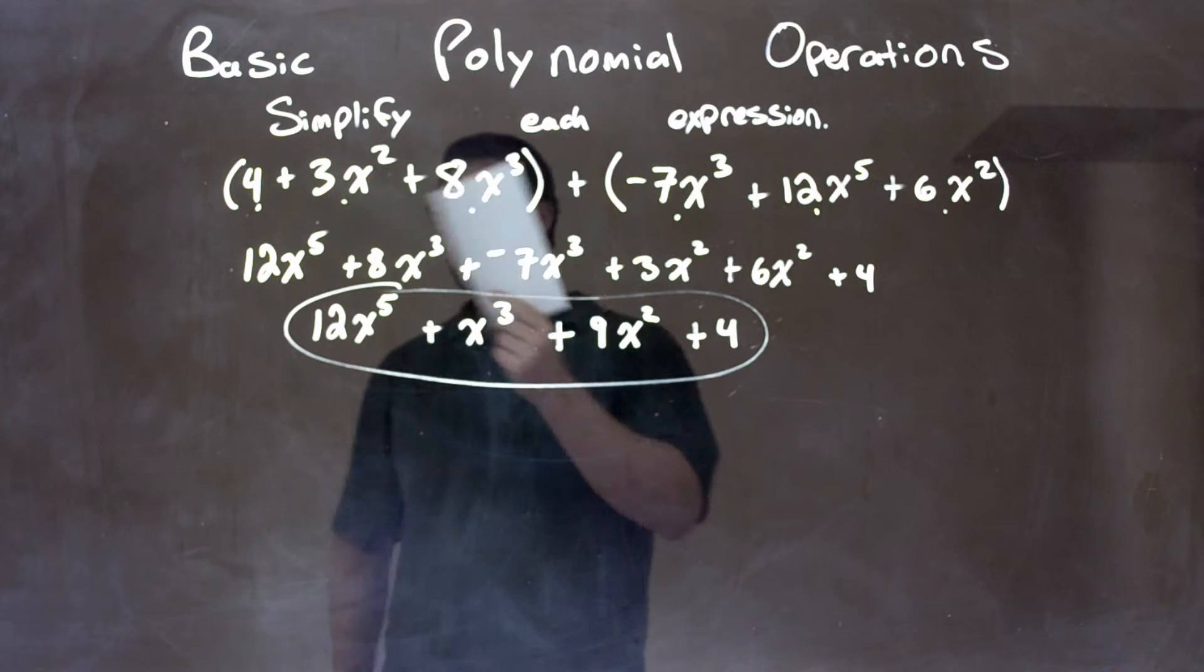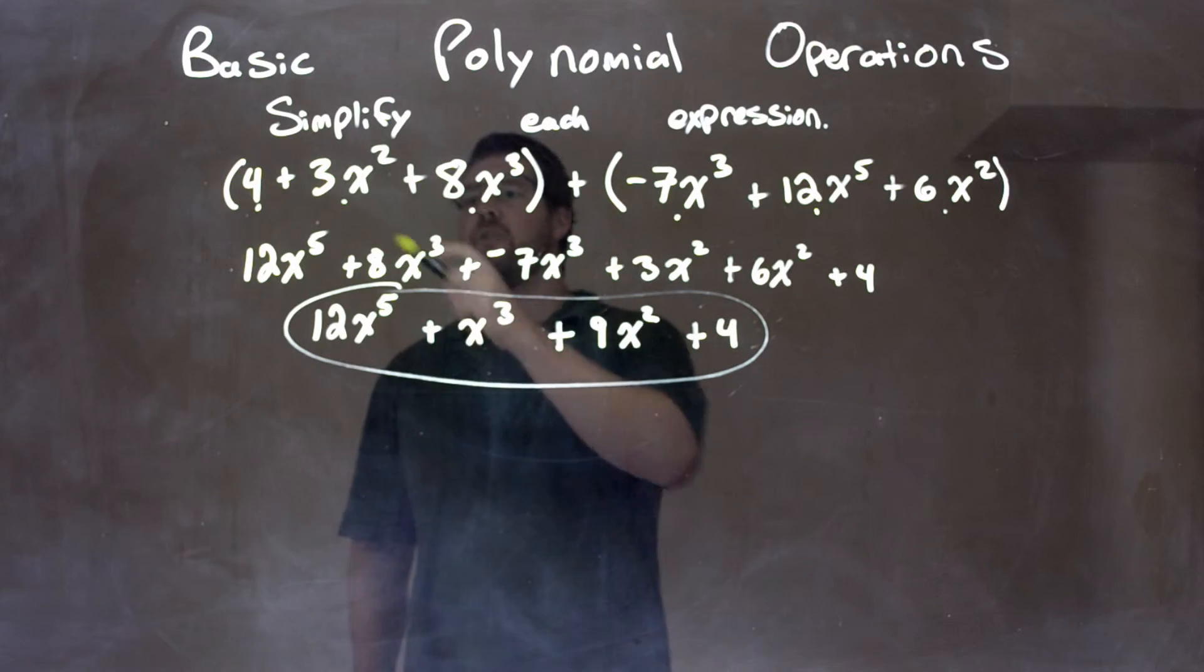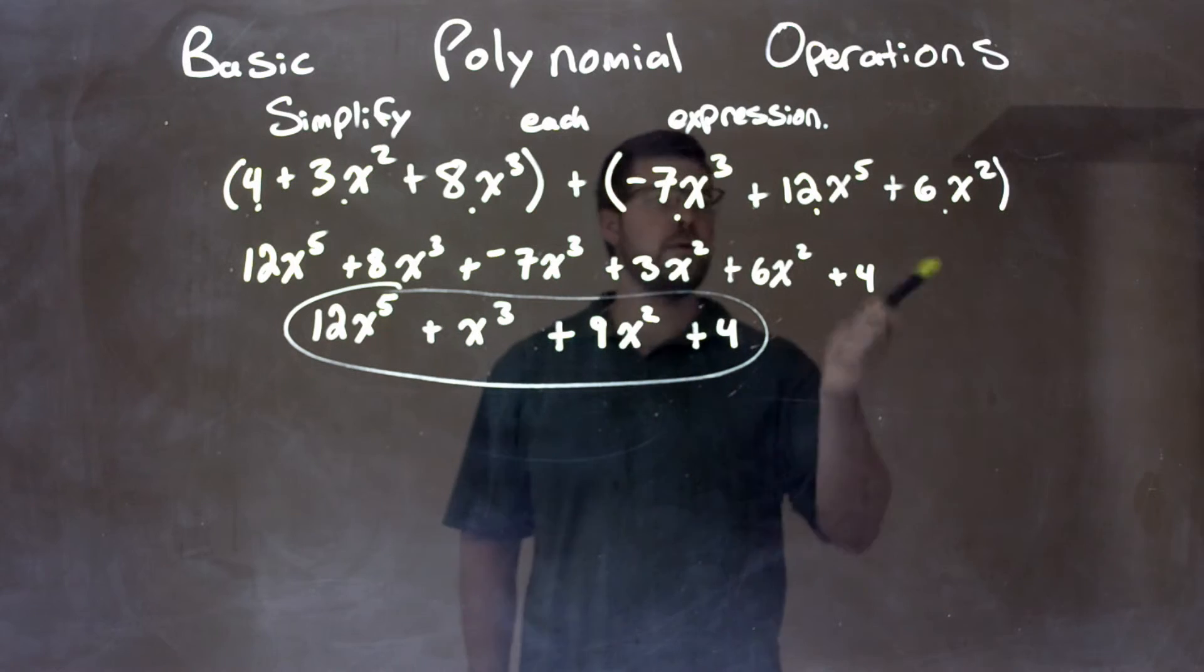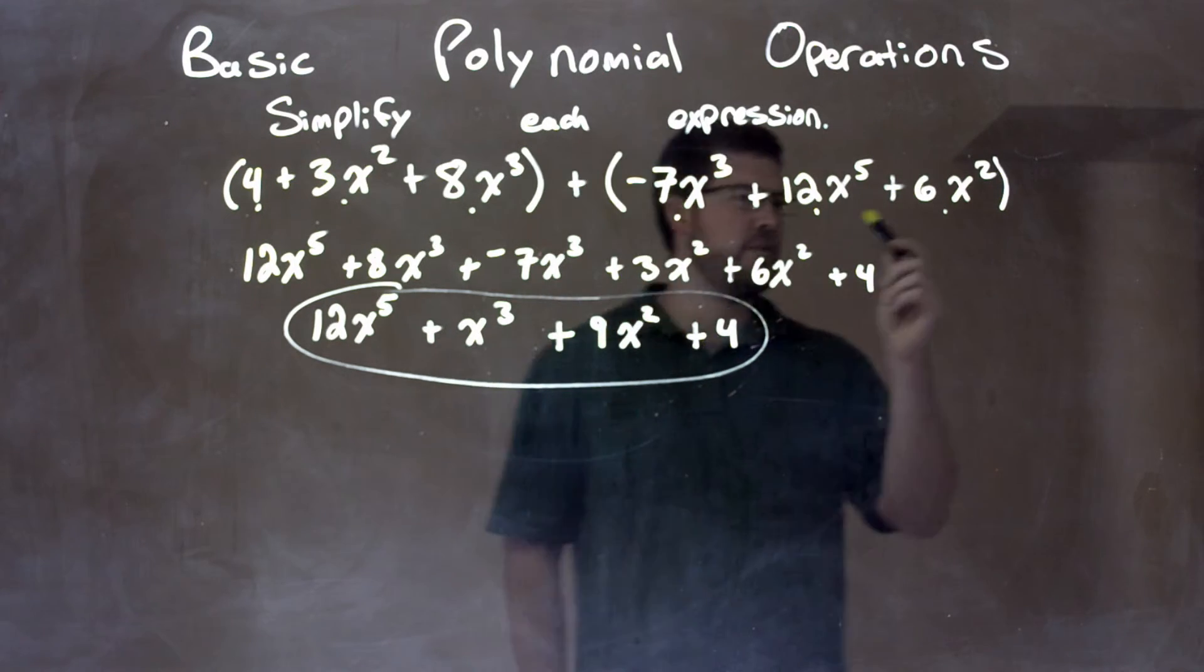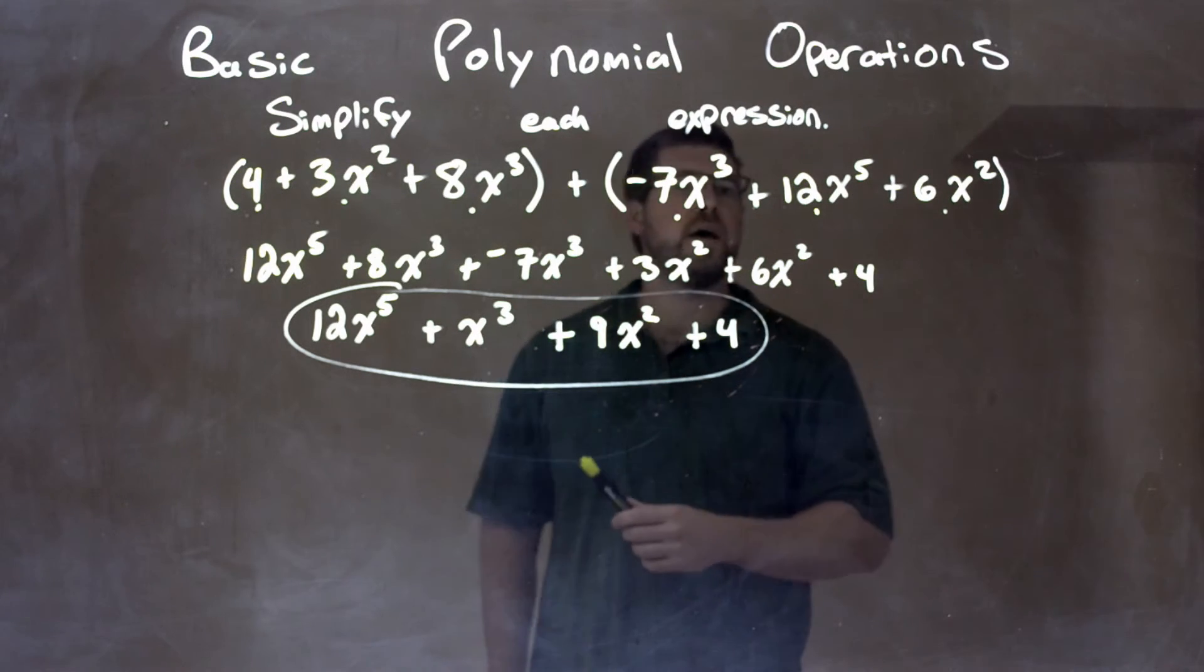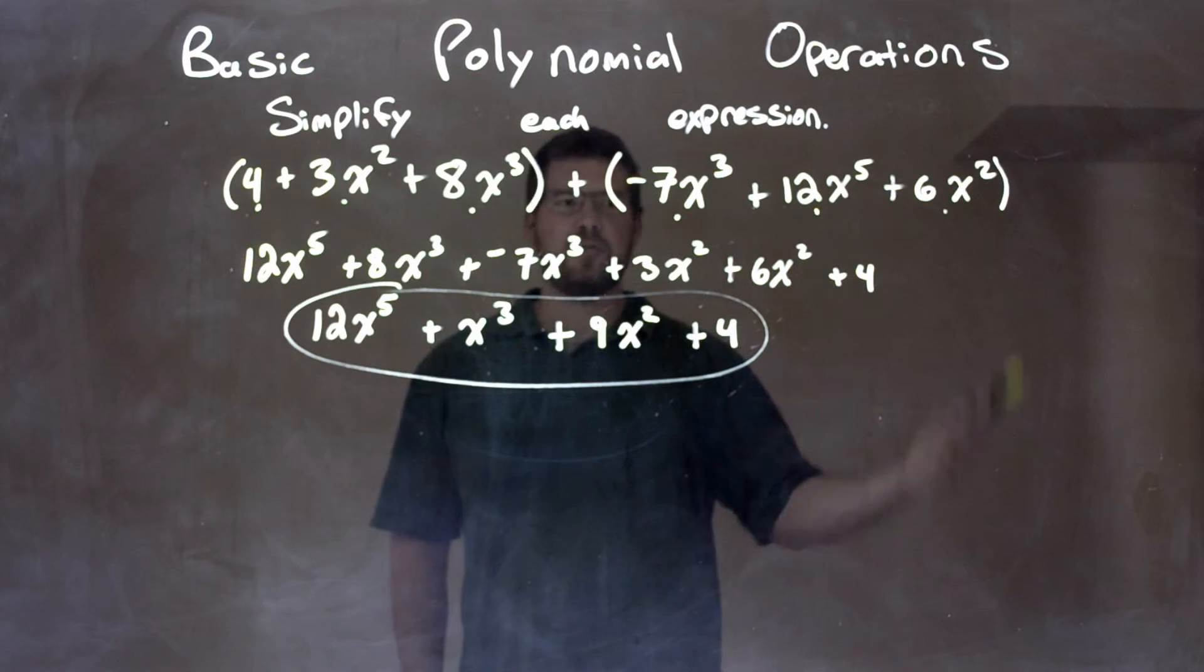Quick recap. We're given 4 plus 3x squared plus 8x to the third in one parenthesis, and we added the other parenthesis: negative 7x to the third plus 12x to the fifth plus 6x squared. Nothing to simplify in each parenthesis, so then we rearrange highest degree first.